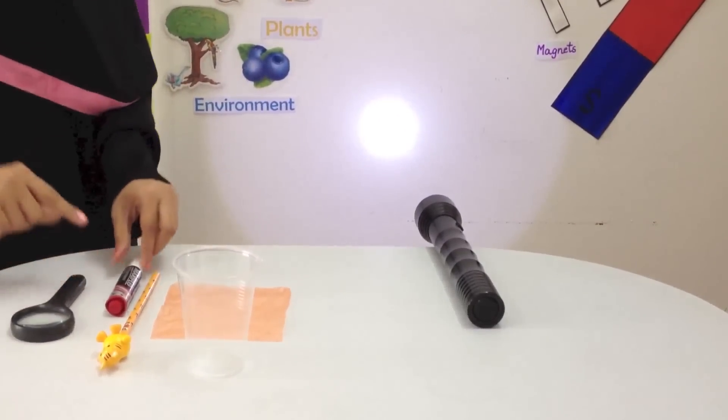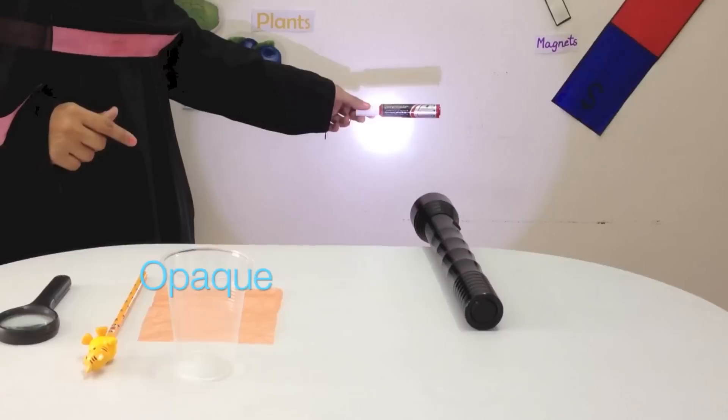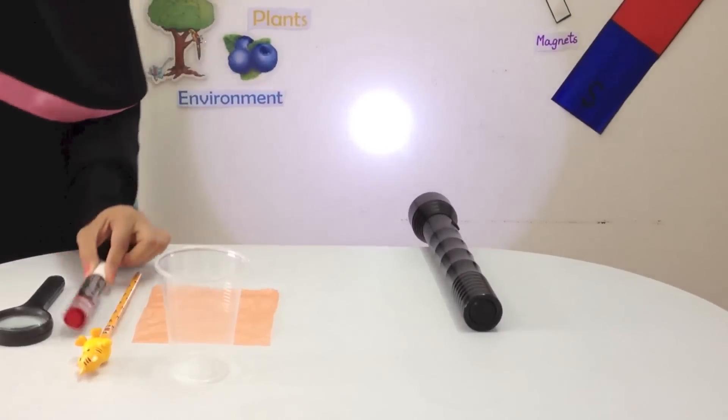The next object I have is a marker which is opaque. It is not letting any light pass through it. So, it is an opaque object.